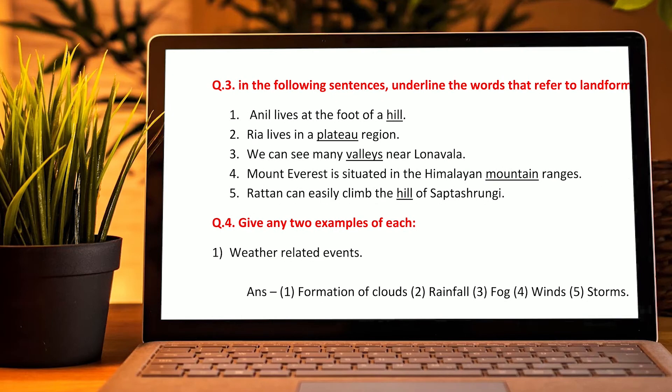Third question: underline the words that refer to land forms. Anil lives at the foot of a hill. Riya lives in a plateau region. We can see many valleys near Lonavala. Mount Everest is situated in the Himalayan mountain range. Ratan can easily climb the hill of Saptatungi.